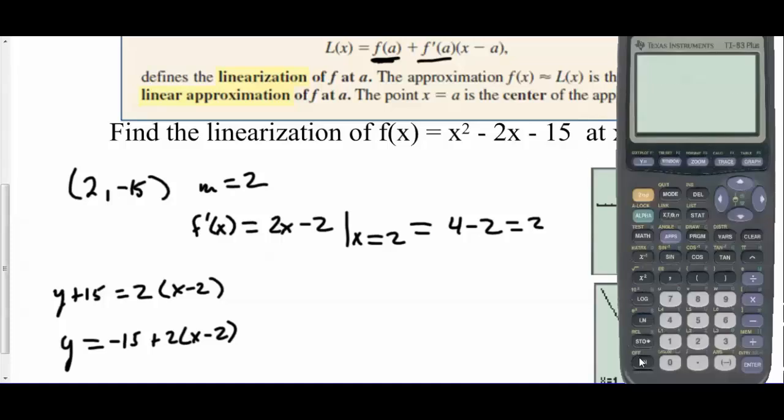Now if we plug those values into the calculator, if we plug 1.9 into the original function we get -15.19. If we plug 1.9 into the line we found, the tangent line, the approximation is -15.2 and these are fairly close. They're only 0.01 off and they're close because we stayed close to the center. 1.9 is very close to 2.